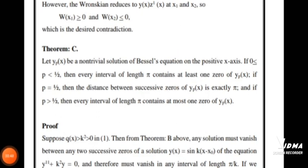A Bessel differential equation is the linear second order ordinary differential equation given by x²(d²y/dx²) + x(dy/dx) + (x² − p²)y = 0. Equivalently, dividing through by x²: d²y/dx² + (1/x)(dy/dx) + (1 − p²/x²)y = 0, which is Bessel's differential equation.